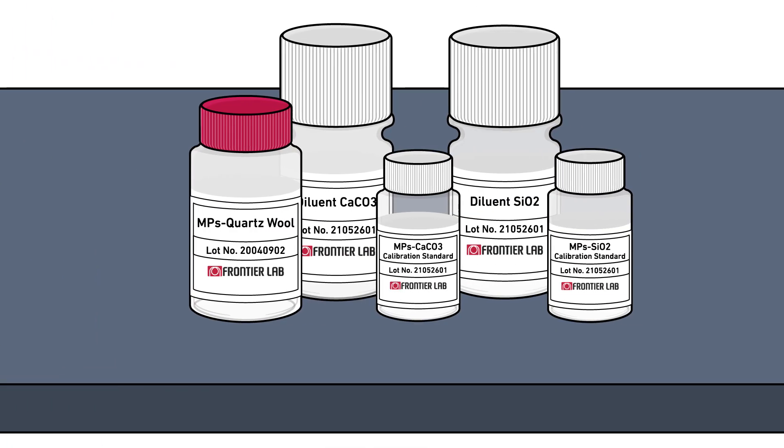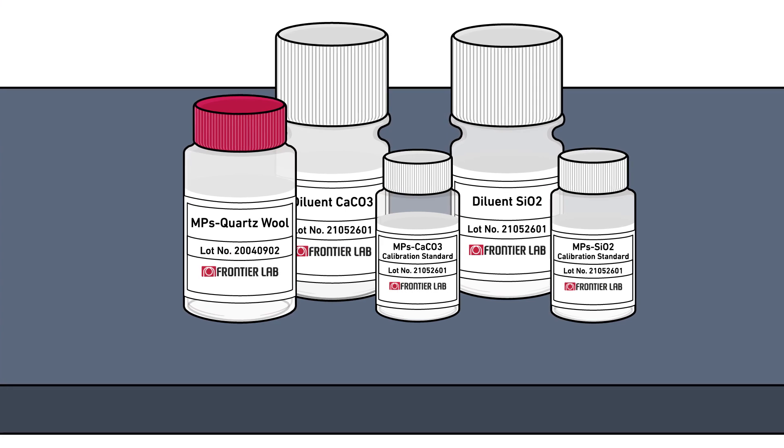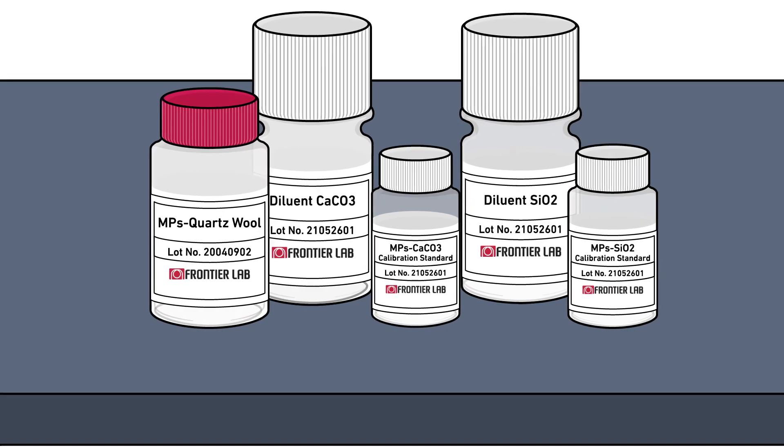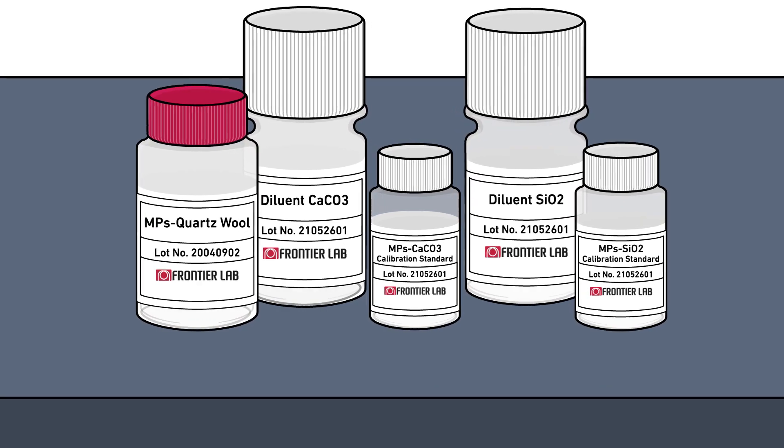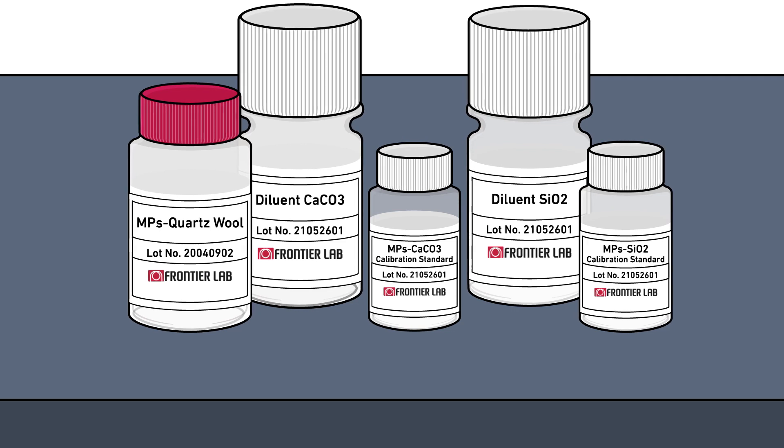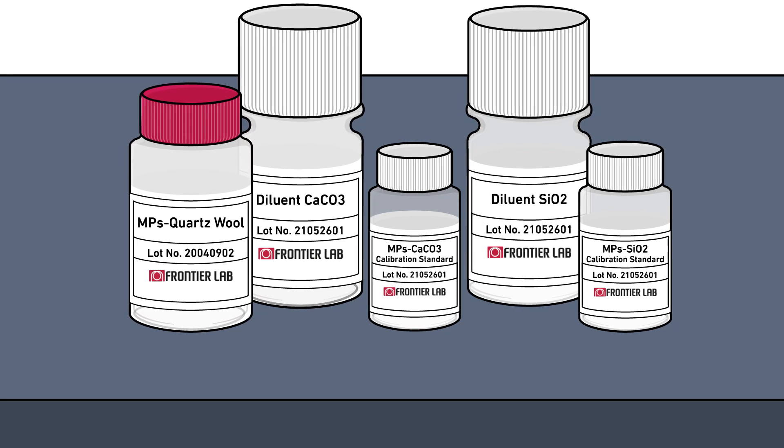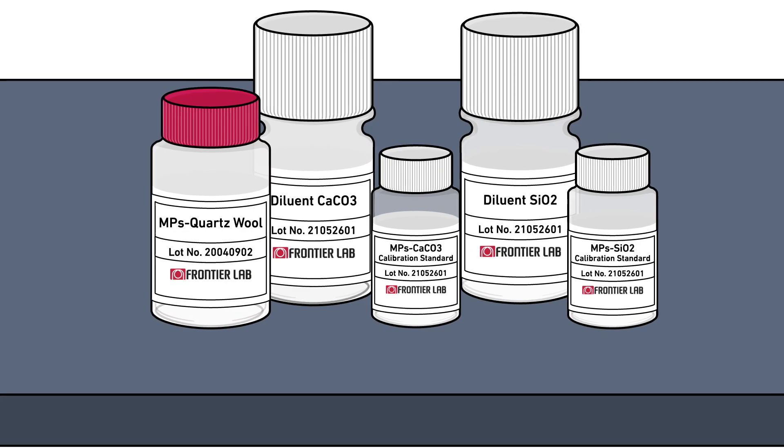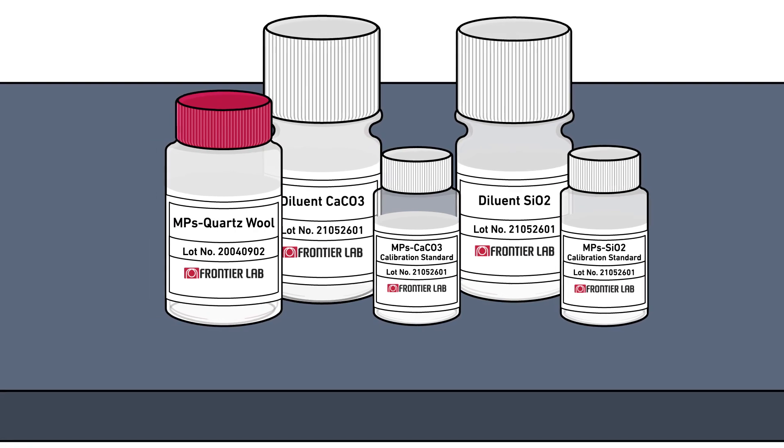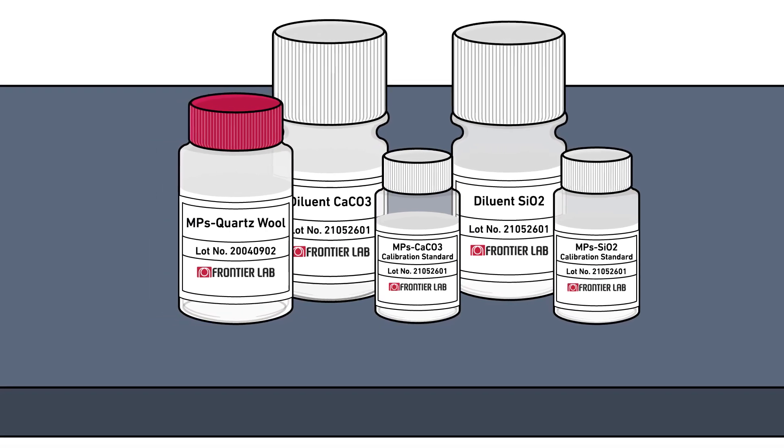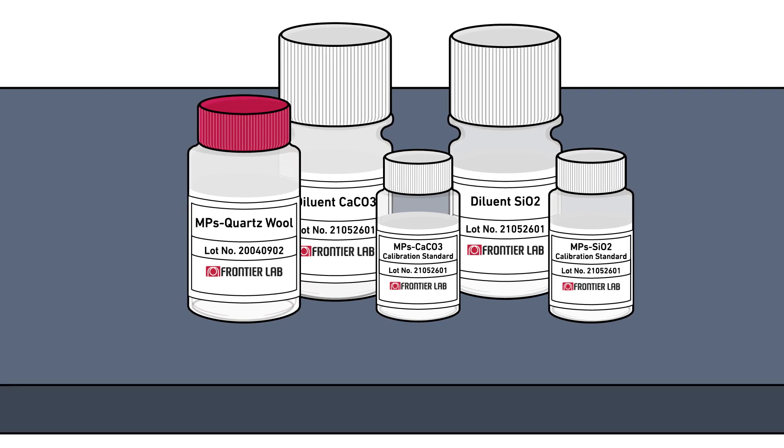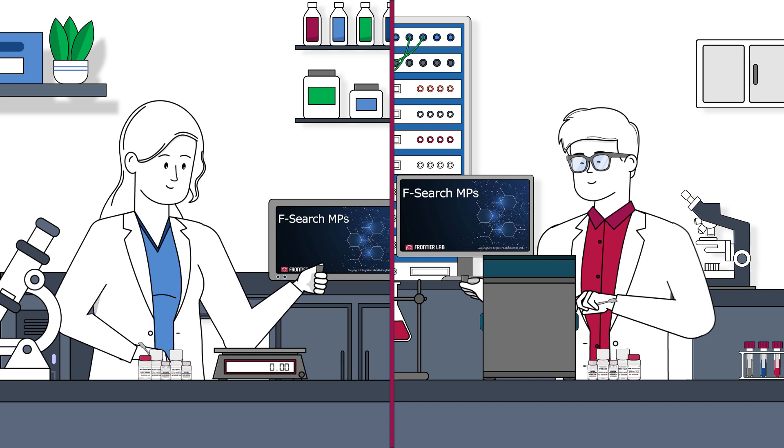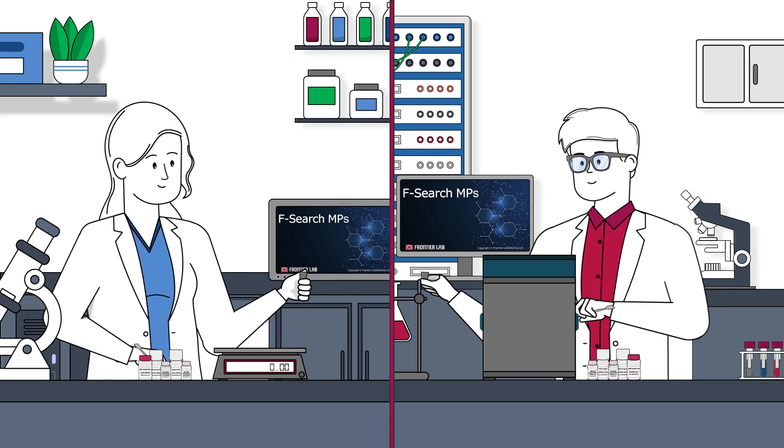Besides our Microfurnace Pyrolysis technology, our easy-to-use and comprehensive microplastics calibration standard kit sets our solutions apart from others. We offer two standards with different diluents, silicon dioxide or calcium carbonate. Both standards contain a few micrograms of each of the commonly used 12 polymers homogeneously dispersed in the diluent for easy weighing on semi-microbalances. But we also thought about laboratories that only have access to a regular balance.